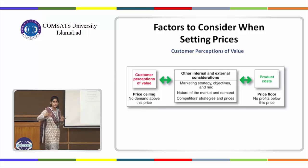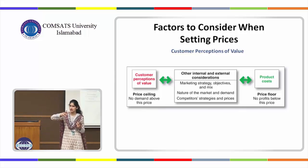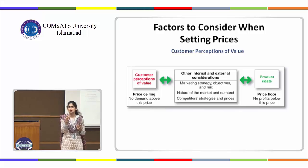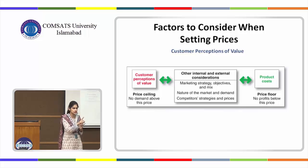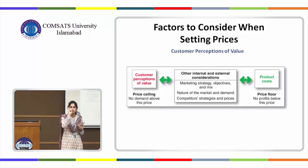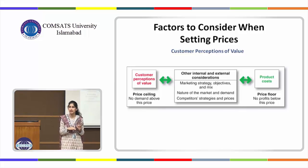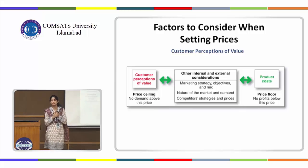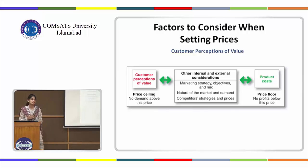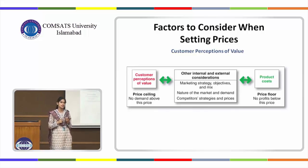The price ceiling is the maximum range of price that you can go for. If you go beyond the price ceiling, the customer would think they are being overcharged for the value being delivered. For example, Serena Hotel charges 30,000 rupees and people are willing to pay that because they think the value is worth it. But if they charged 2,000,000 rupees per night, the same customer might not buy because they'd feel the value isn't as much.